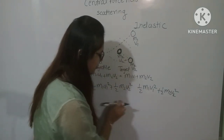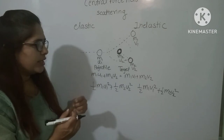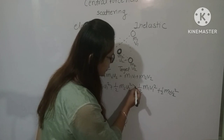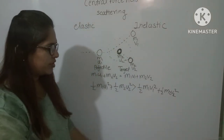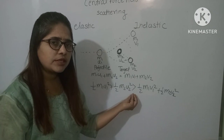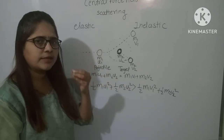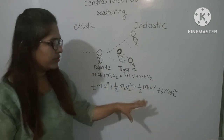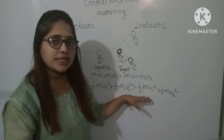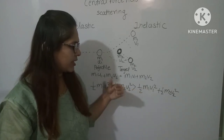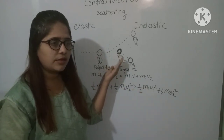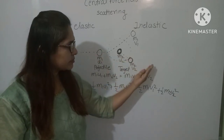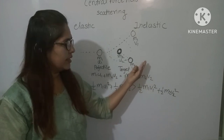In inelastic scattering, the kinetic energy of the particles before collision is always greater than the kinetic energy after collision, because some energy is lost — for example, as sound or heat. Therefore, the kinetic energy of the particles before collision is always greater than the kinetic energy after collision.